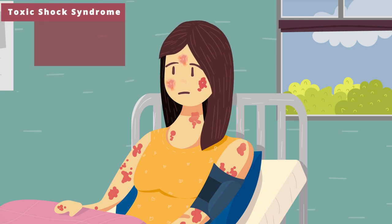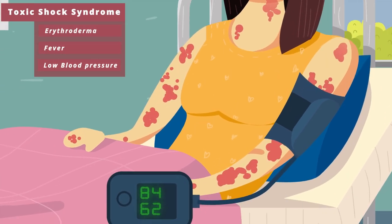Toxic Shock Syndrome is characterized by erythroderma, fever, and low blood pressure.